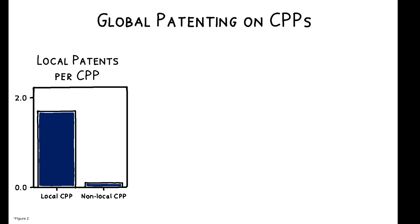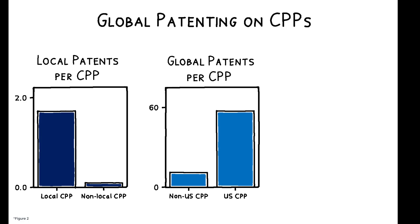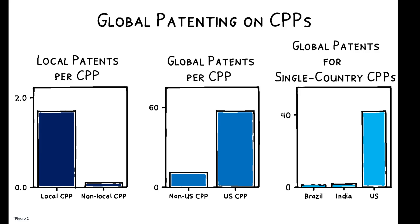These same dynamics are reflected in the aggregate data. Innovators tend to focus on locally present CPPs and, correspondingly, substantially more technology is developed to combat CPPs that exist in high-income, research-intensive countries like the US. In fact, the number of patents related to CPPs that are present only in the US far exceeds the number related to CPPs present only in Brazil or India, two of the world's largest but significantly less research-intensive agricultural economies.